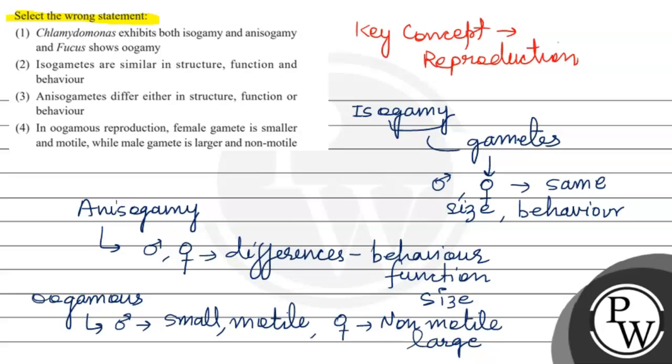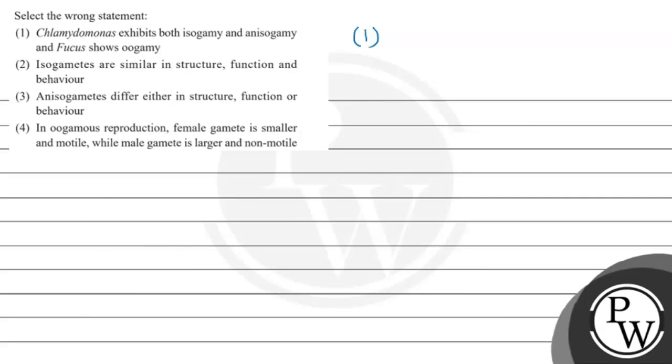Let's talk about the question. The first option states that Clamydomonas exhibits both isogamy and anisogamy, and Fucus shows oogamy. All three types are present in Clamydomonas, and Fucus reproduces through oogamy, so this is correct.